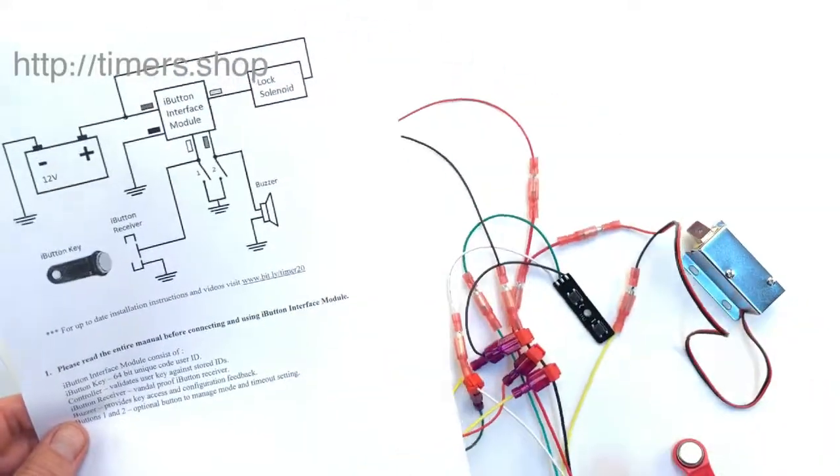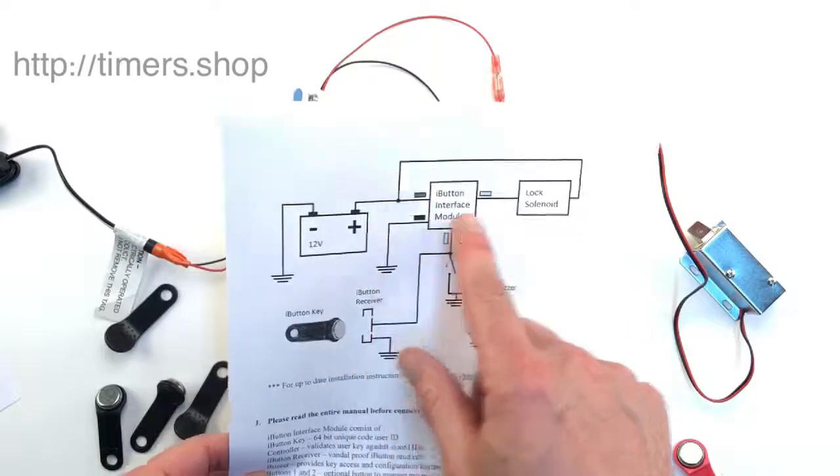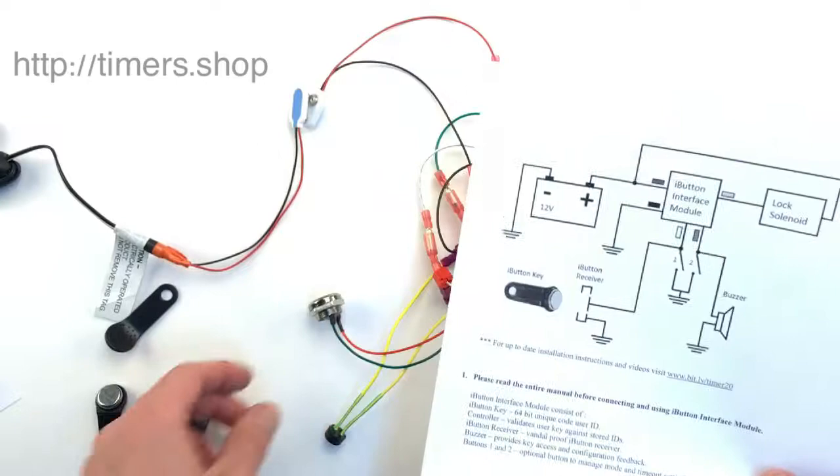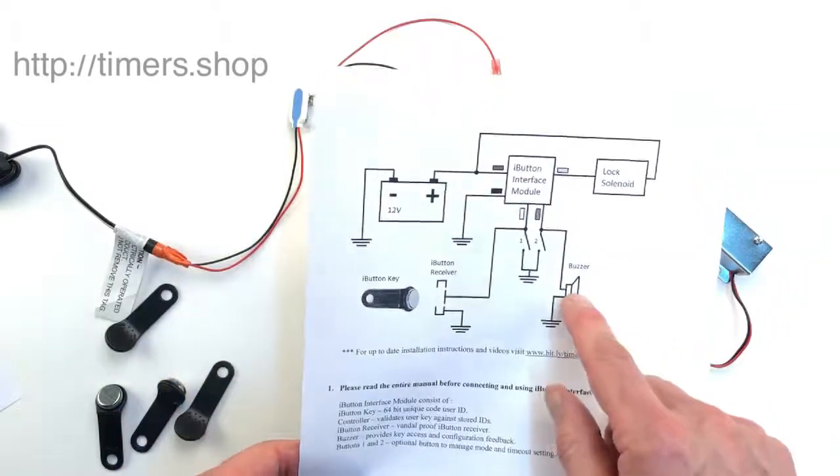So the iButton interface is a small module like this. It connects to the power supply, to a solenoid lock, to the iButton receiver, and also to the buzzer.